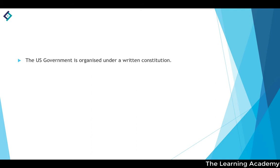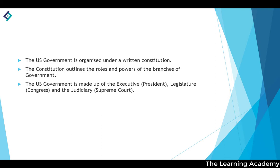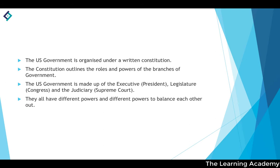The US government is organised under a written — or codified — constitution, which outlines the roles and powers of the branches of government. The federal government is made up of the executive (effectively the president), the legislature (Congress), and the judiciary (the Supreme Court). All three branches have different powers to check and balance each other, so that no one branch gains more power over the others.